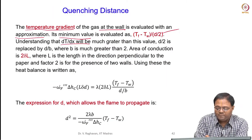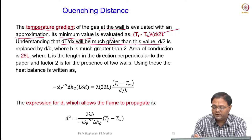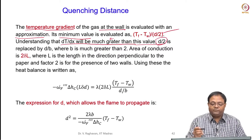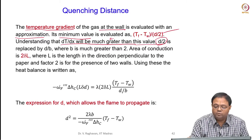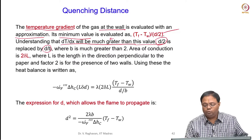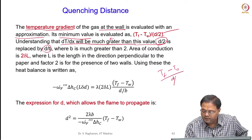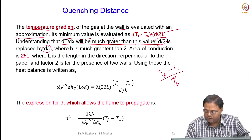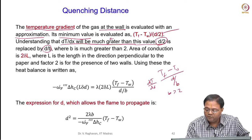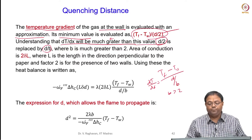Understanding that dT/dx will be much greater than d/2 — this is greater than d/2 — we can replace d/2 by d/b, where b is greater than 2. So we write (Tf minus Tw)/(d/b), where b is greater than 2, so that dT/dx will be greater than what we get from the approximate value.